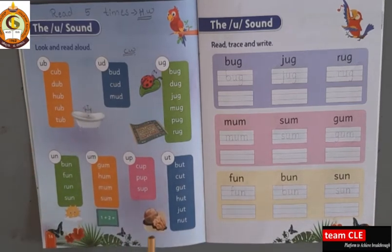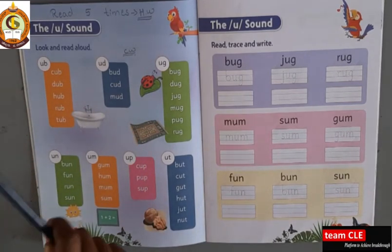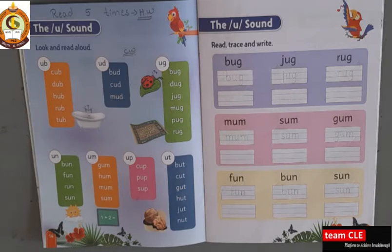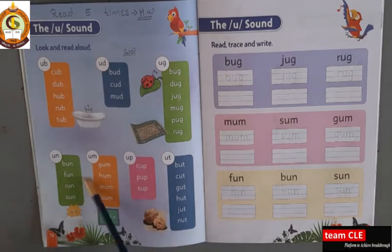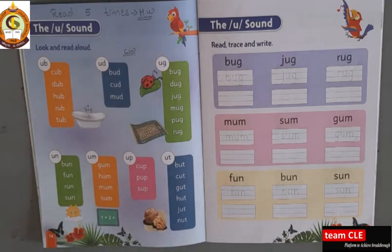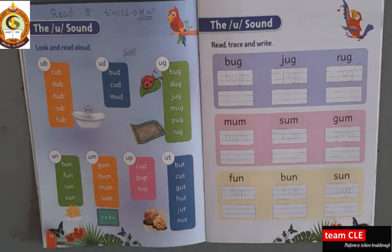So everyone, with the spelling, you are reading this and learning. Very good. So everyone has to spell the spelling, then you have to read this word, U letter. Okay, so how many vowels? Five vowels. So which are the five vowels? A, E, I, O, U.